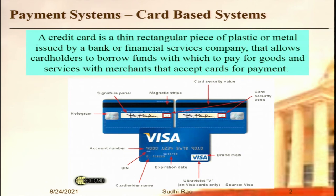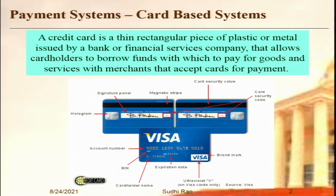Let us first understand what a card is. A credit card or a debit card, or any other kind of card, is a thin rectangular piece of plastic or metal — today mostly plastic. In fact, in many countries, we refer to credit cards or debit cards as plastic. We do not call them money. We say 'charge it to my plastic.' It is issued by a bank or financial services company that allows card holders to borrow funds.